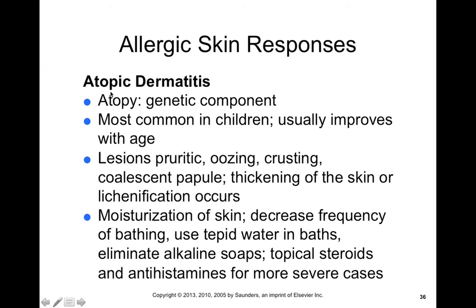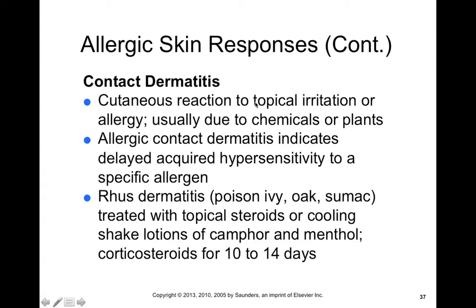Contact dermatitis is a cutaneous reaction due to irritation or allergy from chemicals or plants — essentially an acquired hypersensitivity from a specific allergen. You get rhus dermatitis from things like poison ivy, oak, and sumac. If you recall, this was an example of a hypersensitivity where a hapten forms that excessive immune reaction. Because it's an immune-mediated mechanism, we can treat it with corticosteroids for up to two weeks in order to limit your immune system's response.